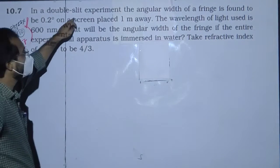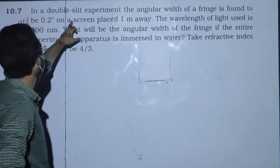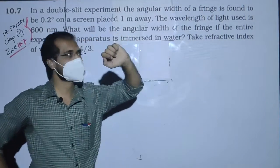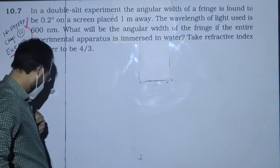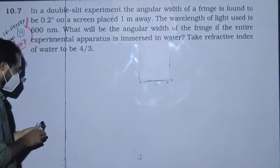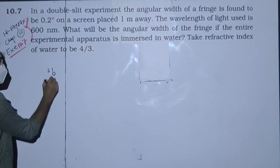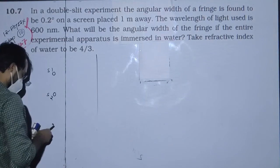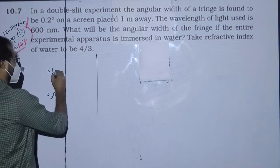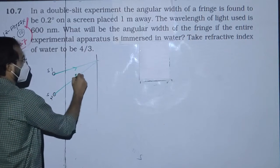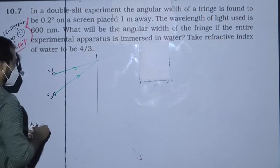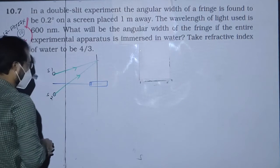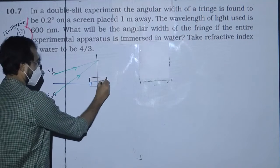In a double slit experiment, the angular width of a fringe is found to be 0.2 degrees on a screen placed 1 meter away. In a double slit experiment setup, here is S1, here is the screen, here is the light source, and the middle line is the main maximum, followed by dark fringe, then light fringe.